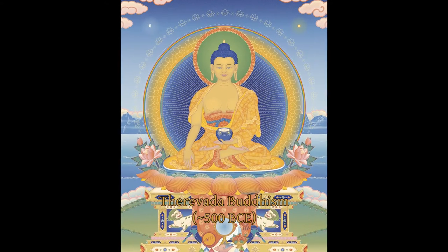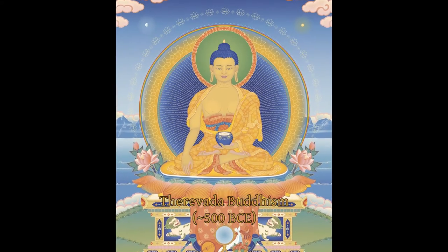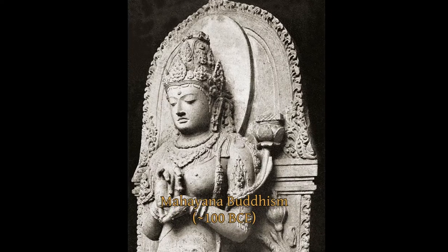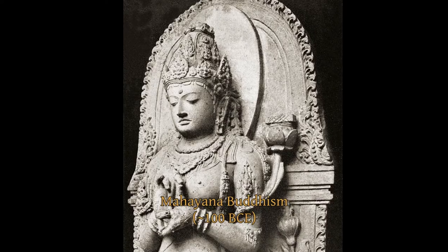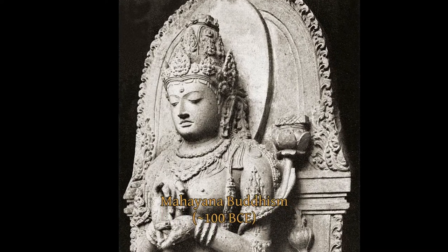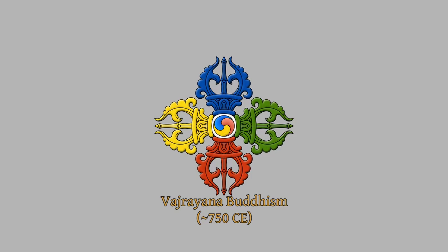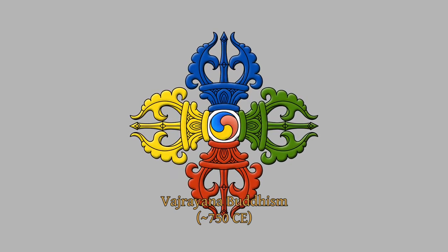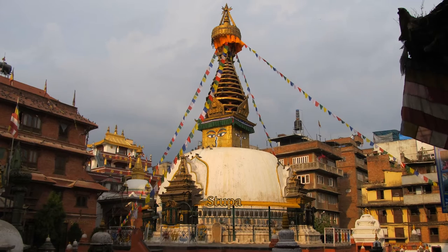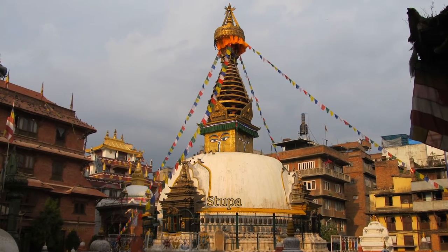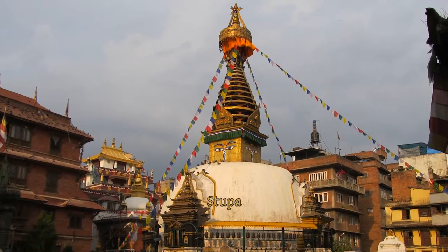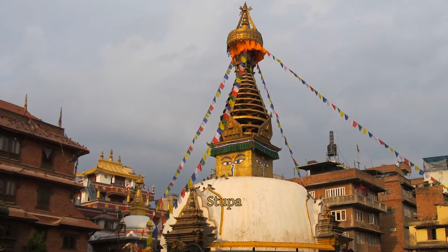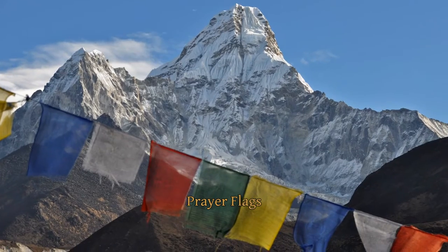Where the original teachings of the historical Buddha comprised Theravada Buddhism, Mahayana clarified the nature of Nirvana and the phenomenal world in relation to each other, and Vajrayana showed how to achieve what the Buddha taught in a single lifetime. This structure of the five elements is found in Buddhist stupas, monuments that contain important relics, and also in prayer flags.